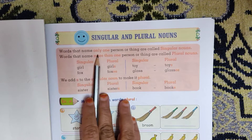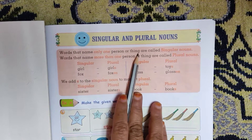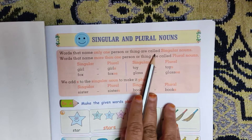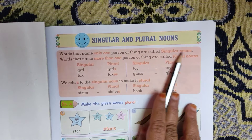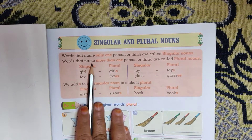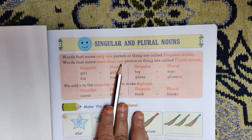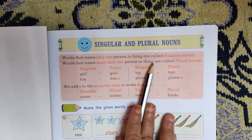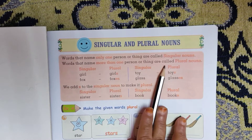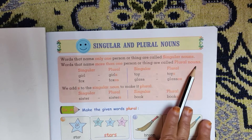Words that name only one person or thing are called singular noun. Words that name more than one person or thing are called plural noun.